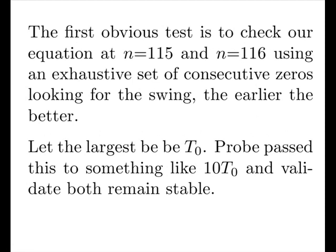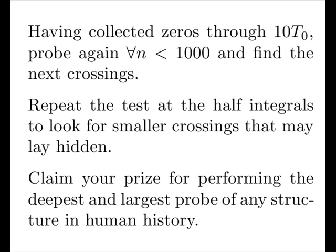The first obvious test is to check our equation at n equals 15 and n equals 16, using an exhaustive set of consecutive zeros looking for the swing. The earlier, the better. Let the largest such t be t naught. Probe past this to something like 10 times t naught and validate that both remain stable. Or the model is wrong, you know. That's what we're looking for. Having collected zeros through 10 to 10 times t naught, probe again for all n less than say 1,000. And find the next crossings, if any. Repeat the test at the half integrals and look for smaller crossings that may lay hidden. And then, claim your prize for performing the deepest and largest probe of any structure in human history. Congratulate yourself.